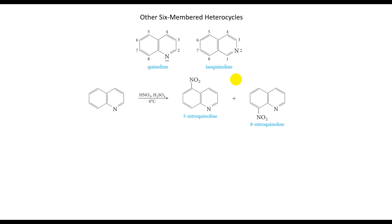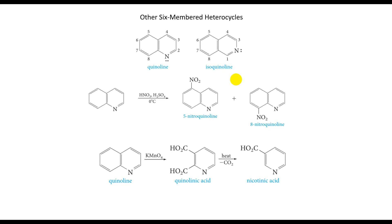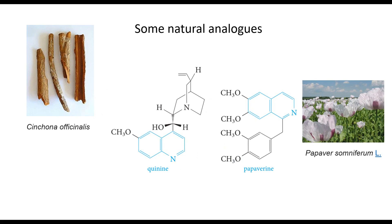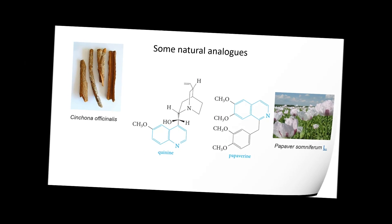The stability of the pyridine ring is also illustrated by its resistance to oxidation. When quinoline is treated with potassium permanganate, the benzene ring is oxidized. The quinoline and isoquinoline ring systems occur in many natural products. Good examples are quinine, which occurs in cinchona bark and is used to treat malaria, and papaverine, present in opium and used as a muscular relaxant.